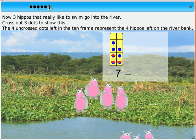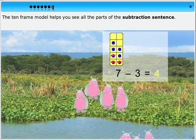Cross out three dots to show this. The four uncrossed dots left in the 10-frame represent the four hippos left on the riverbank. The 10-frame model helps you see all the parts of the subtraction sentence.